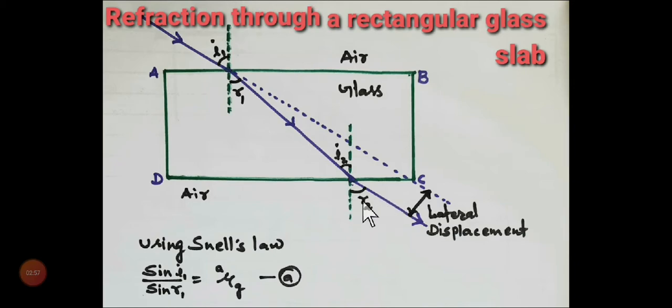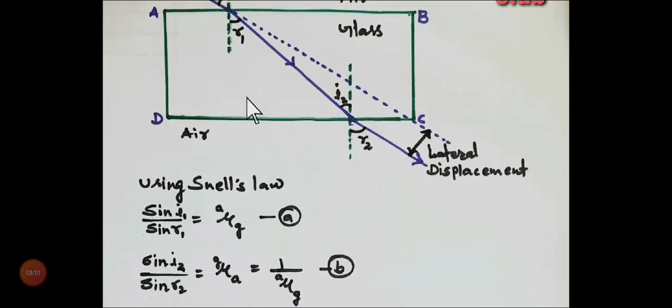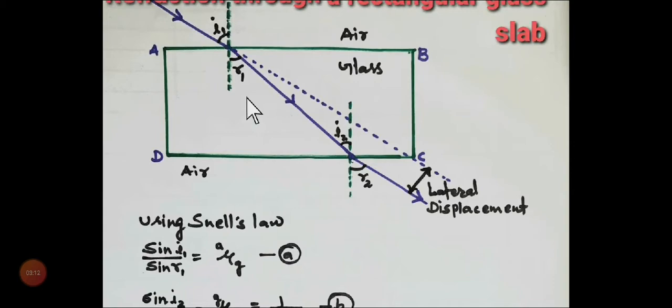What will be the value of r2 angle? Then you can say this is again, this will be 30 degrees according to the properties, or this will be equal to r1.